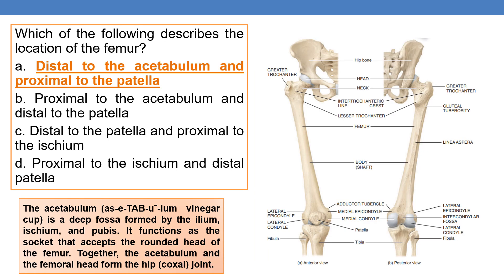Coming to the next question: which of the following describes the location of the femur? The acetabulum is a deep fossa formed by the ilium, ischium, and pubis — these are the hip bones. It functions as a socket that accepts the rounded head of the femur. This is the head of the femur, and this portion of the hip bone which accepts the head of the femur is the acetabulum.